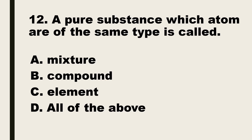Number 12. A pure substance whose atoms are of the same type is called: A. A mixture, B. A compound, C. An element, D. All of the above.